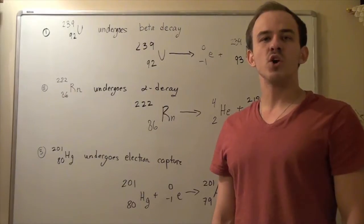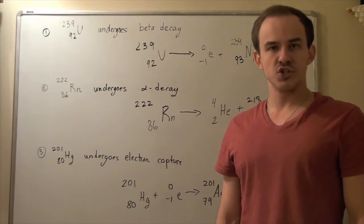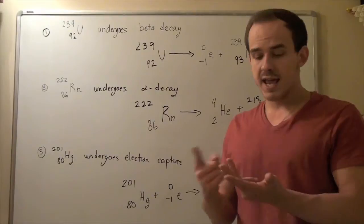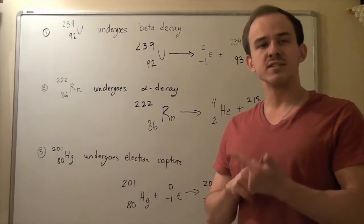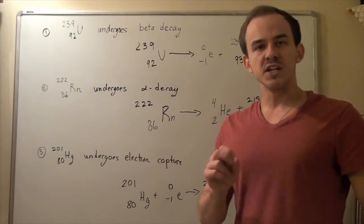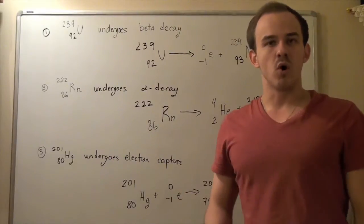In this example, we're going to look at three radioactive decay reactions. We're going to look at beta decay, alpha decay, as well as electron capture. Let's begin with example number one.